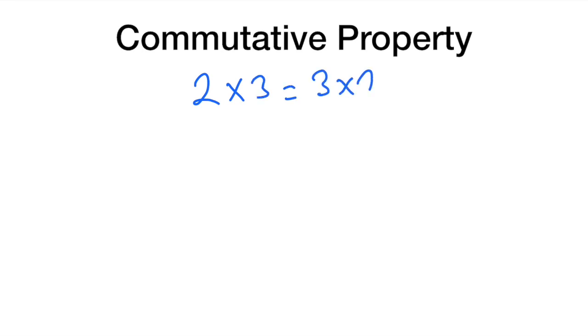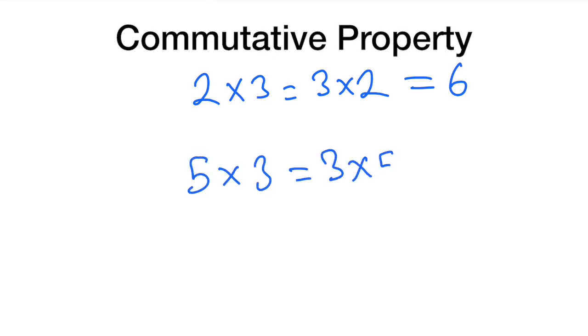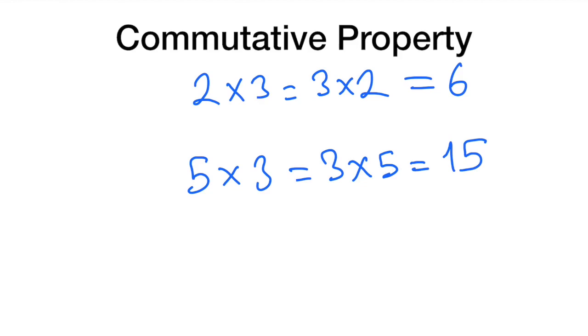What about multiplication? Let's give an example: two times three equals three times two, and the result is six. Five times three equals three times five — the result is fifteen. And multiplication also has the commutative property.